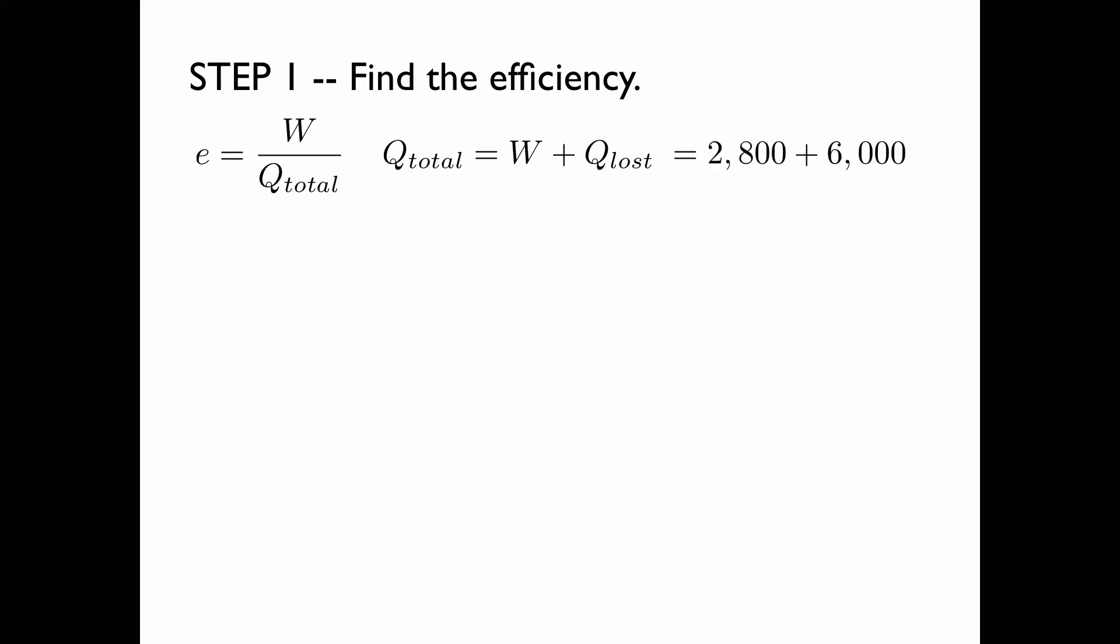It was stated that the work done is 2800 joules and the heat loss is 6000 joules so the Q_total is 8800 joules. This implies that the efficiency is equal to the work done, 2800, divided by 8800, which is 0.32, which is 32%.